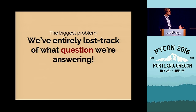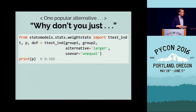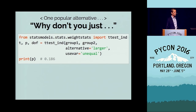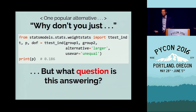The problem is we've entirely lost track of what question we're answering. Some people might say just import t-test from statsmodels and plug in the right parameters to get a p-value. But again, this might not be the right level of abstraction for a lot of folks in this room. The problem is: what question is this answering? If you're four years into a statistics degree you might know, but stepping back — this is the real key: the sampling distribution, Student's t-distribution.